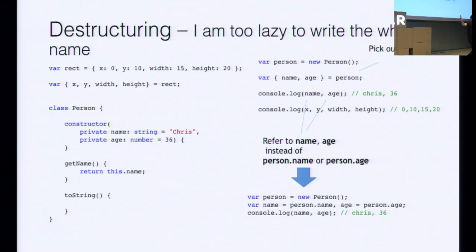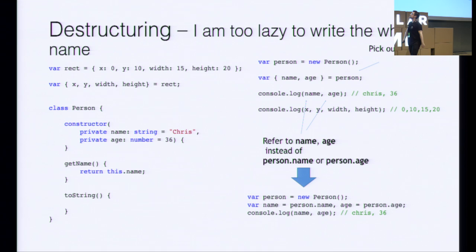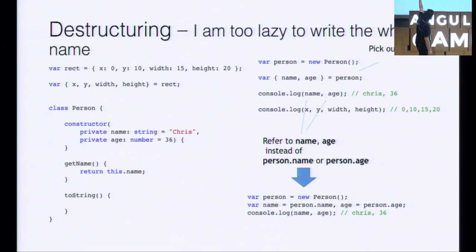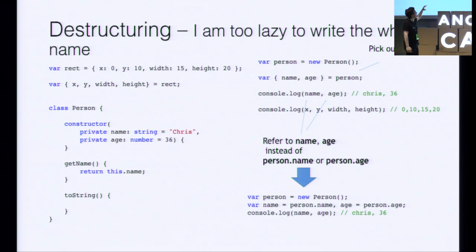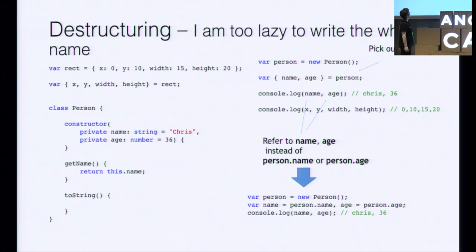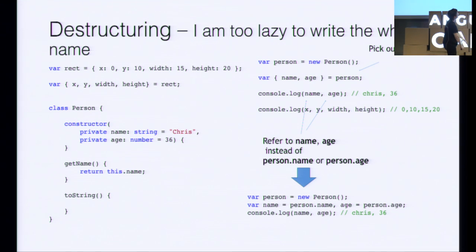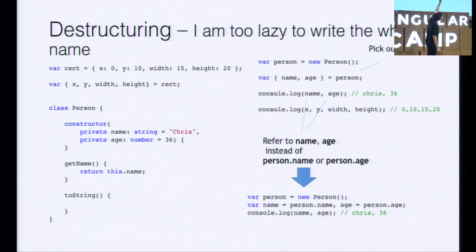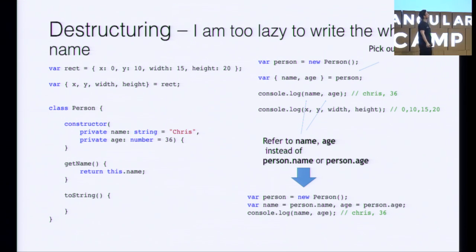Destructuring — more lazy stuff. Destructuring is about not wanting to write the fully qualified name of things. We have this rectangle with properties like x, y, width, and height, but we don't want to write rect.x or rect.y. By writing var with curly braces containing x, y, width, height equals rect, we're done with rect — we just write x or y. We can see another example with a person constructor — doing var name, age equals person, we can then console log name and age with no person involved.